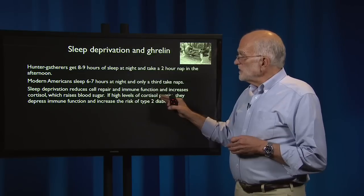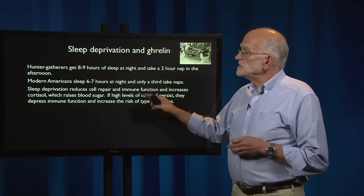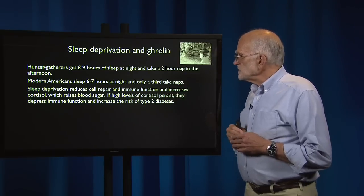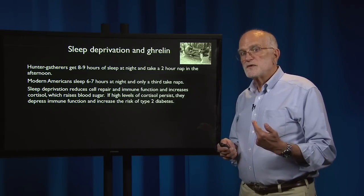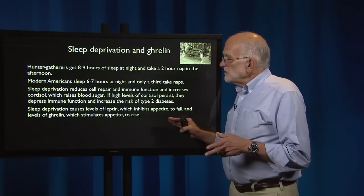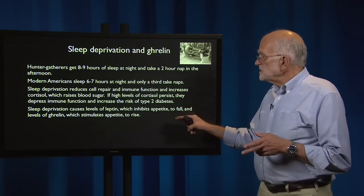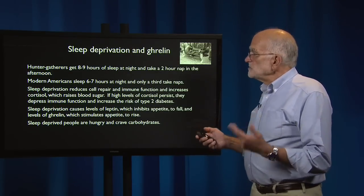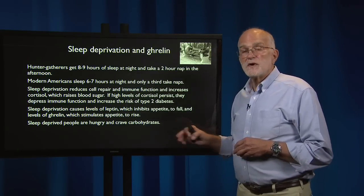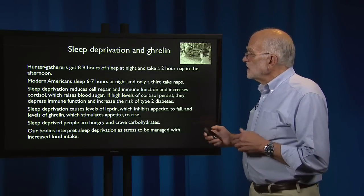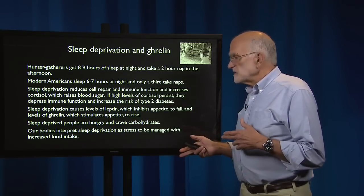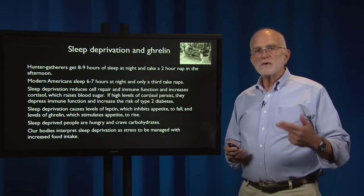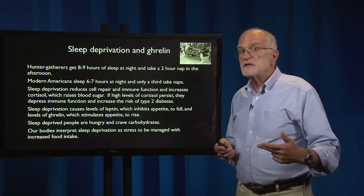Sleep deprivation reduces cell repair, cuts down immune function, and increases cortisol, which raises blood sugar. If high levels of cortisol persist, they depress immune function and increase the risk of type 2 diabetes. Sleep deprivation also causes levels of leptin — which inhibits appetite — to fall, and levels of ghrelin — which stimulates appetite — to rise. Sleep-deprived people are therefore hungry and crave carbohydrates. Our bodies interpret sleep deprivation as a stress that needs to be managed with increased food intake, even though it is no longer reliably associated with the kind of stress that actually requires increased food intake.